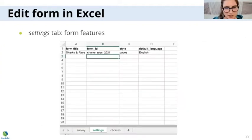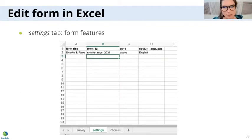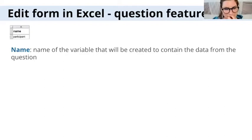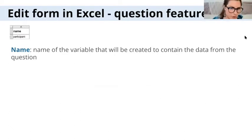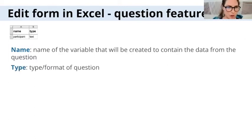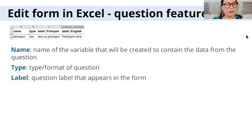And then you have the settings tab, which is useful if you want to set a default language, for example, and if you want to assign a title to the form to be displayed at the top when the surveyor opens it. The columns in the survey tab are question features. I'm only going to present the main ones here, but there are additional ones you can use. The name is the name of the variable that will be created to contain the data from that question. The type is the type of question it is — Diane gave the example of a select one question earlier.